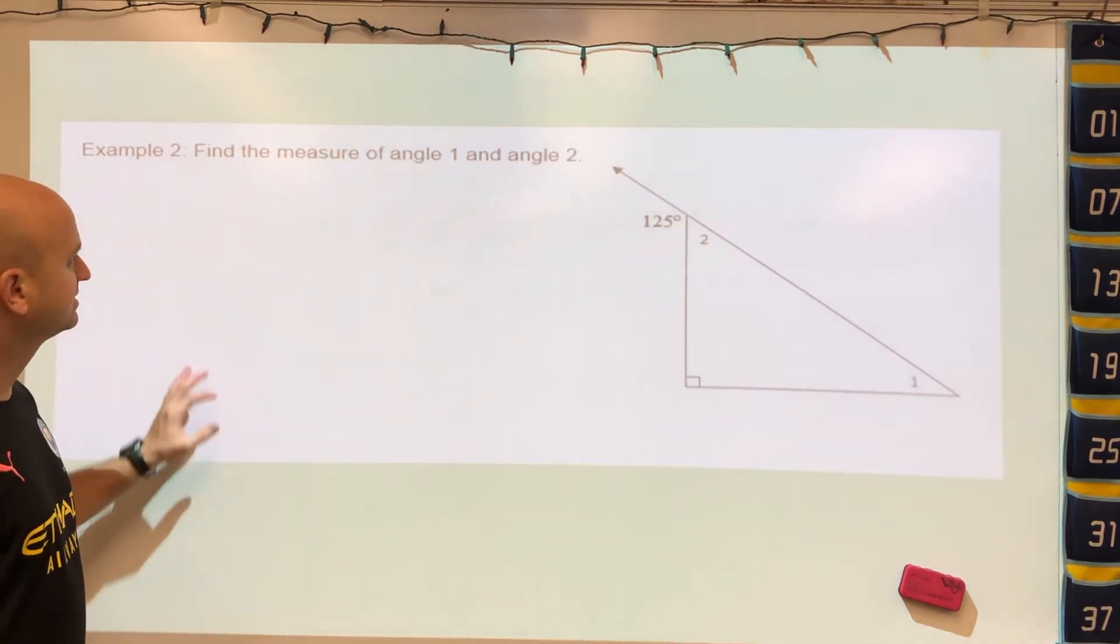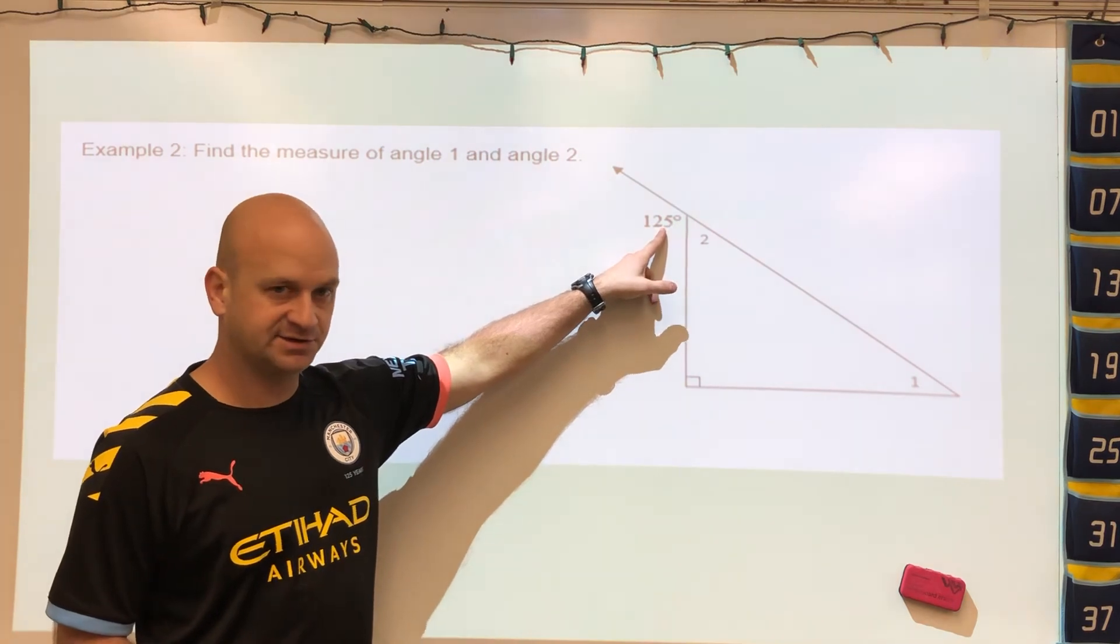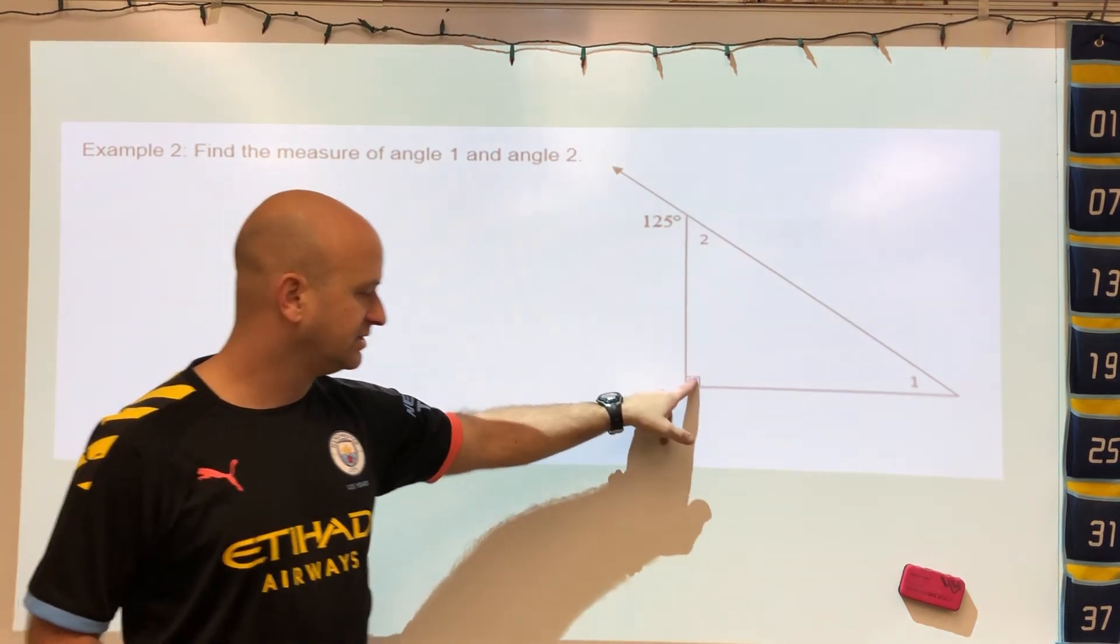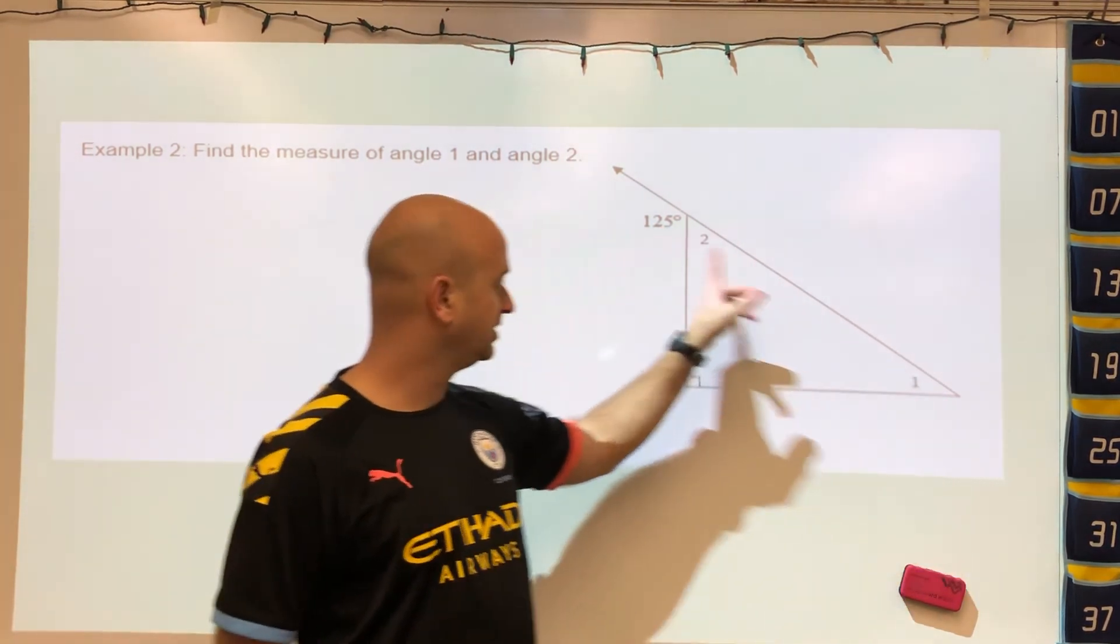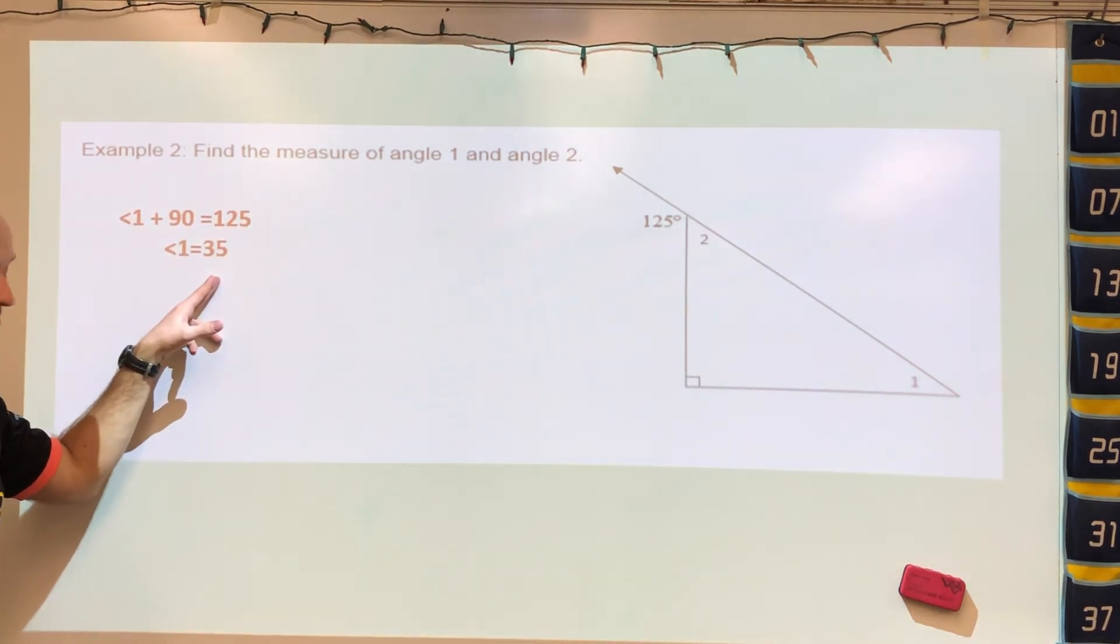This last example here, angle 125 is an exterior angle. This is 90. So 90 plus angle 1 would equal 125, and we figure out angle 1 is equal to 35 degrees.